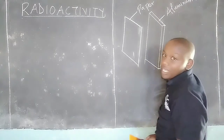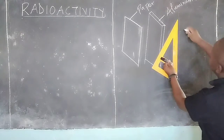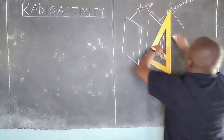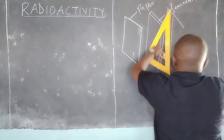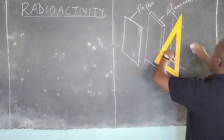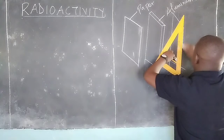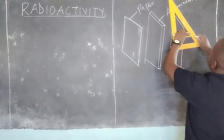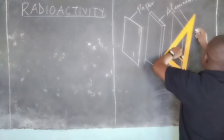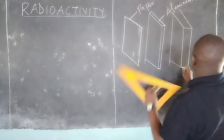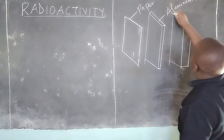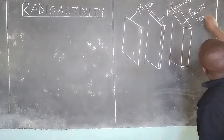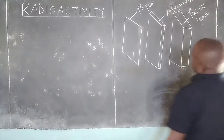That is an aluminium foil. Then after this we have a lead block, which is thick. Lead is one of the materials with very high density. Lead is one of the materials used to shield the machines which operate with dangerous radiations. Therefore, this is a thick lead block.